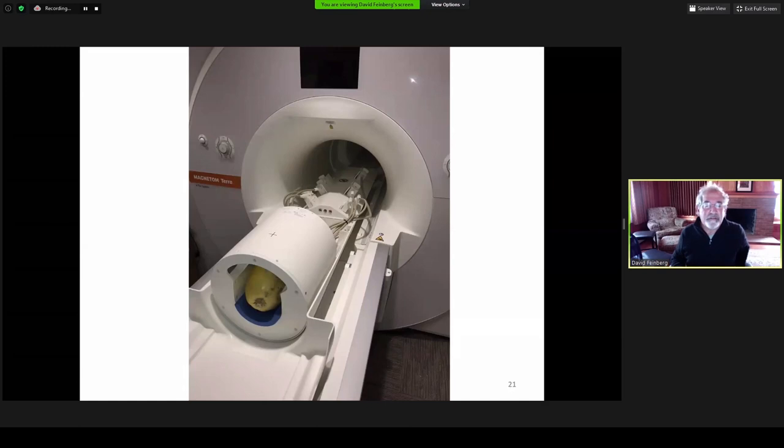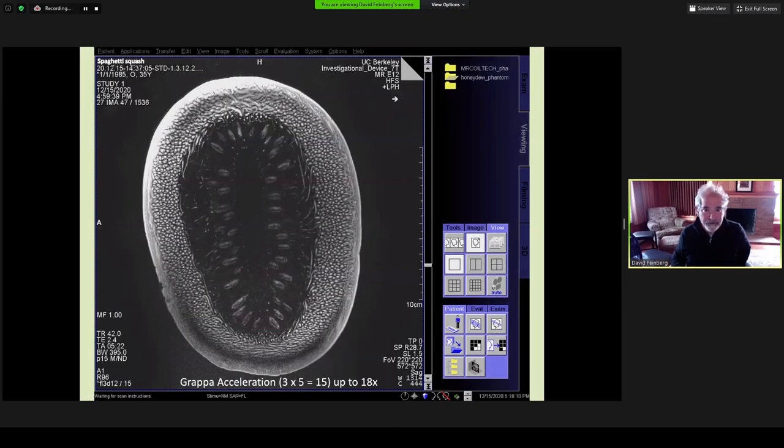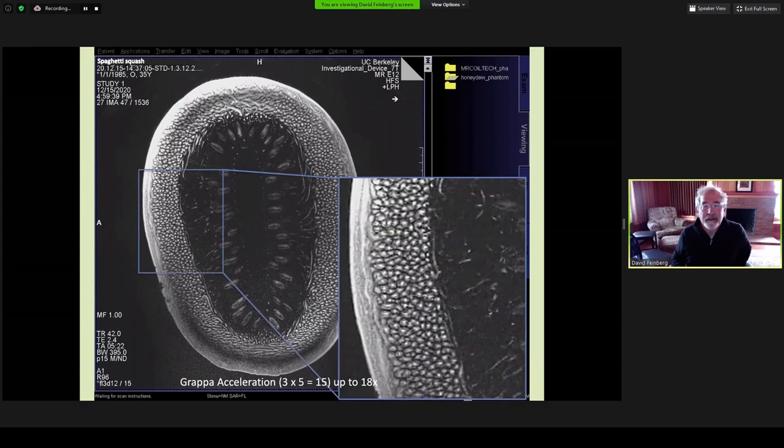We tested on different size melons and larger squash that are about the size of the head. Here you see a spaghetti squash that we imaged. Very pleasing high-resolution images. The gradients allowed a slightly earlier TE, but what was most interesting was the acceleration factors that we could go up to as high as 18 on these initial tests, which is far higher than we could ever achieve on a 32-channel coil.